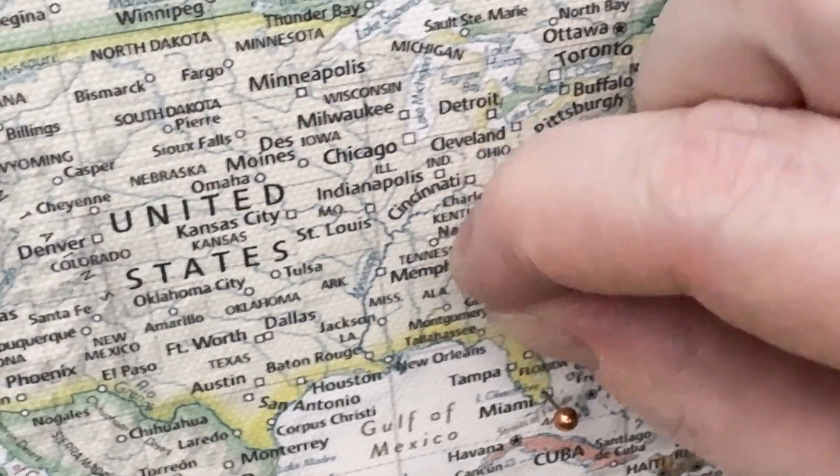Because here's the thing about maps. They're not just decoration. They also shape how we see the world. If you spend your whole life looking at a map where Africa looks small, where Europe looks massive, where distances are completely wrong, that affects how you think. It affects how you understand geography. How you think about travel. How you process the news when you hear about a place. Maps matter. The version of the world we look at every day matters.